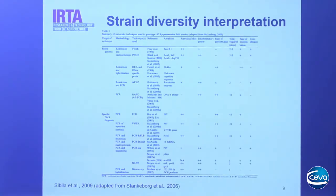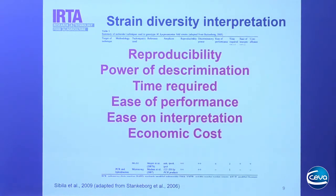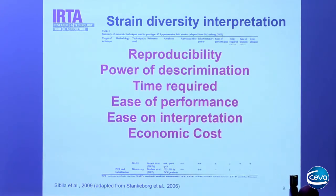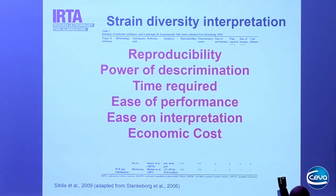There are main characteristics these techniques should accomplish. First, reproducibility — a sample tested in one lab should give the same results as when tested in another lab. The power of discrimination is the capacity to differentiate between two different isolates. Time required, ease of performance, and ease of interpretation depend on how many steps are involved in each technique. Finally, one of the most important factors is the economic cost, because these techniques involve not only PCR but also sequencing, making them more expensive.